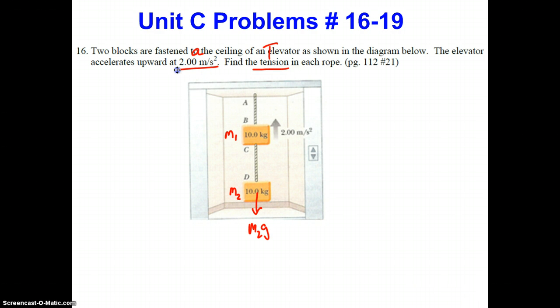We also have this tension in this rope up on this object, which we'll call T2. For the top object m1, we have its weight down m1g. We also have that second rope pulling down on it, and we have this rope pulling up on it which we'll call T1. To keep these straight, we'll call T1 the tension in rope AB and T2 will be the tension in rope CD.